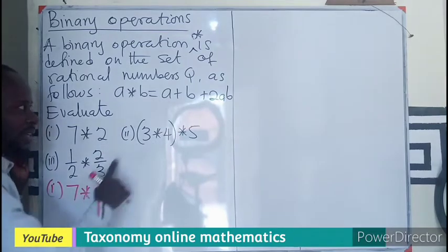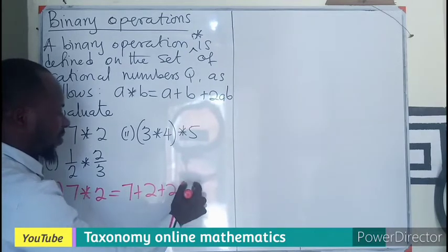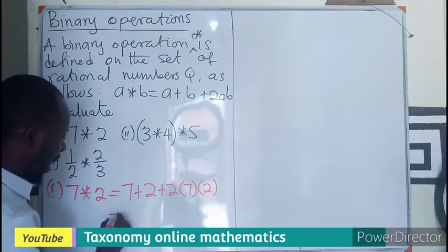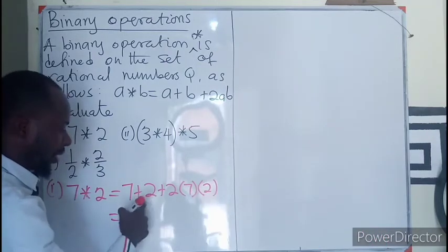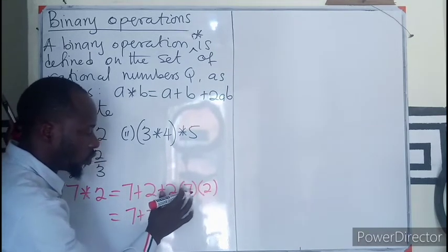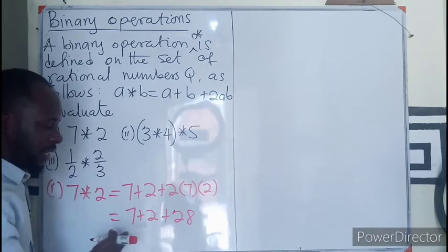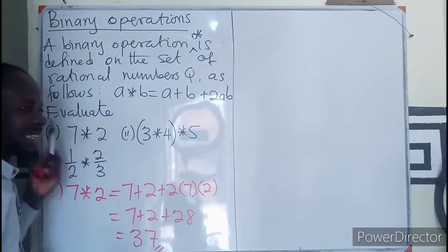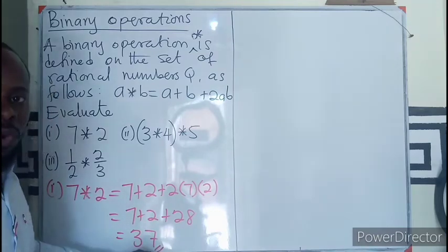To evaluate 7★2: a is 7 and b is 2, so we have 7 plus 2 plus 2 times 7 times 2. That gives 7 plus 2 plus 28. Adding all three: 28 plus 2 is 30, and 30 plus 7 is 37. So per this operation, 7★2 produces a value of 37.